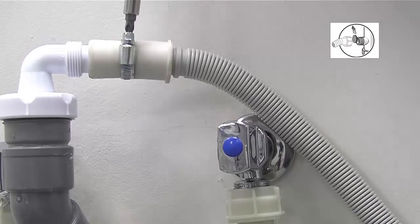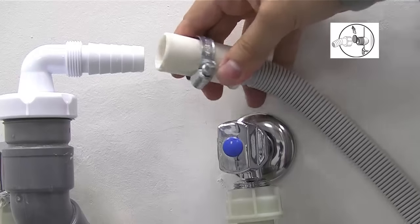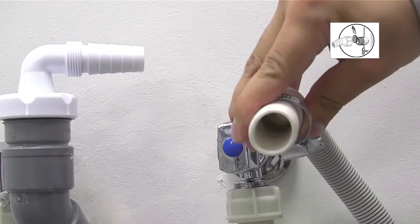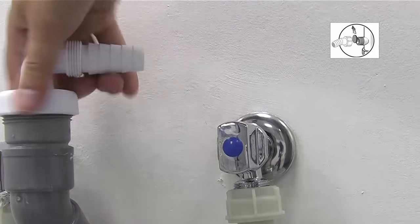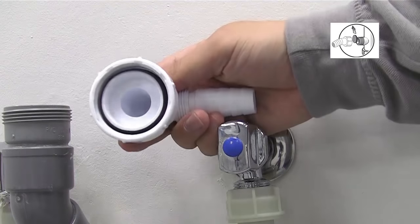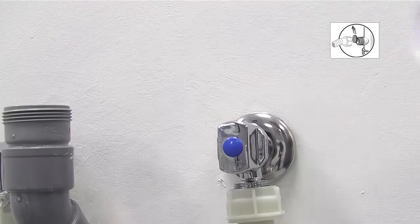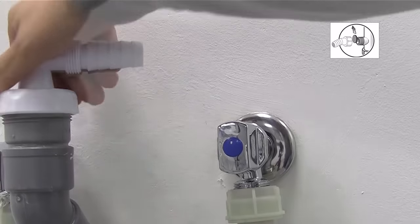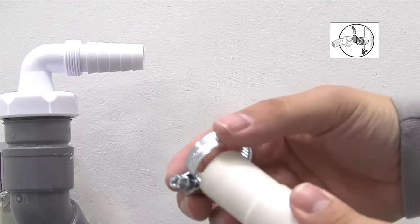Unscrew the collar, detach the hose and check it is not blocked by any residues. Then unscrew the spigot and also check that this isn't blocked. Reattach the spigot securely and then the hose, ensuring it is tightly connected using the collar.